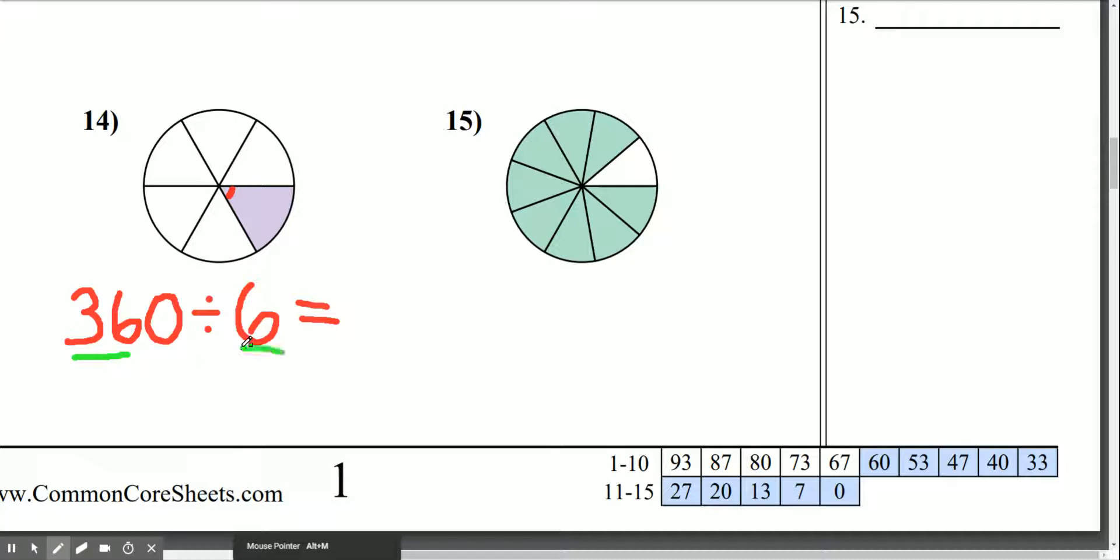I know that 36 divided by 6 is 6, and I'm going to place the 0. So 360 divided by 6 equals 60, which means each of these angles is 60 degrees.